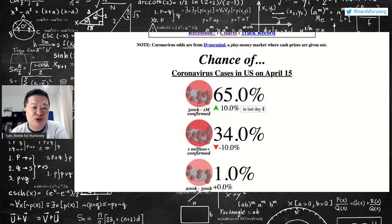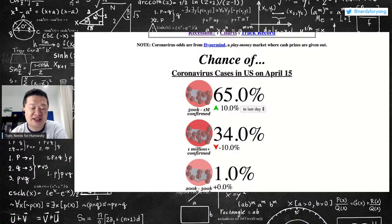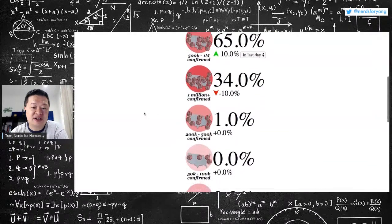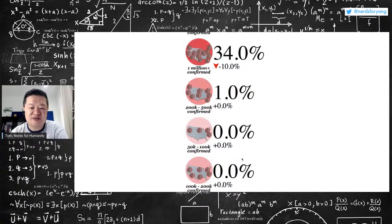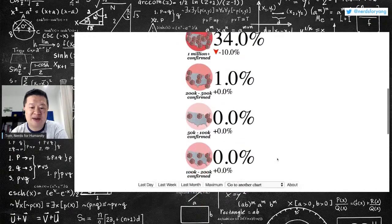And then most people do not think that we will be less than 500,000. There's only a 1% chance that we will only double the number of cases, and no one thinks we're going to have less cases than we do today.